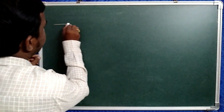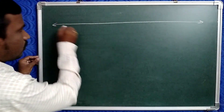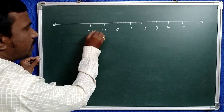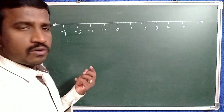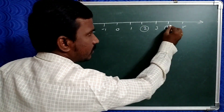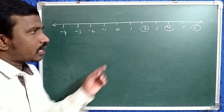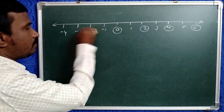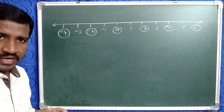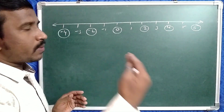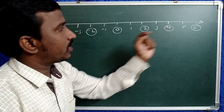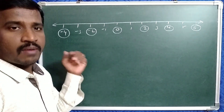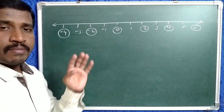Friends, now take the integers number line. Here we have 0, 1, 2, 3, 4, 5 and on the negative side: minus 1, minus 2, minus 3, minus 4. Now 2 is an even number, 4 is also an even number, 6 is also an even number — so alternate numbers are even. Similarly, 0 is also an even number, minus 2 is also an even number, minus 4 is also an even number. That is why any number which is exactly divisible by 2 is called an even number. So 6, 4, 2, 0, minus 4, minus 6, minus 100 are all even numbers.